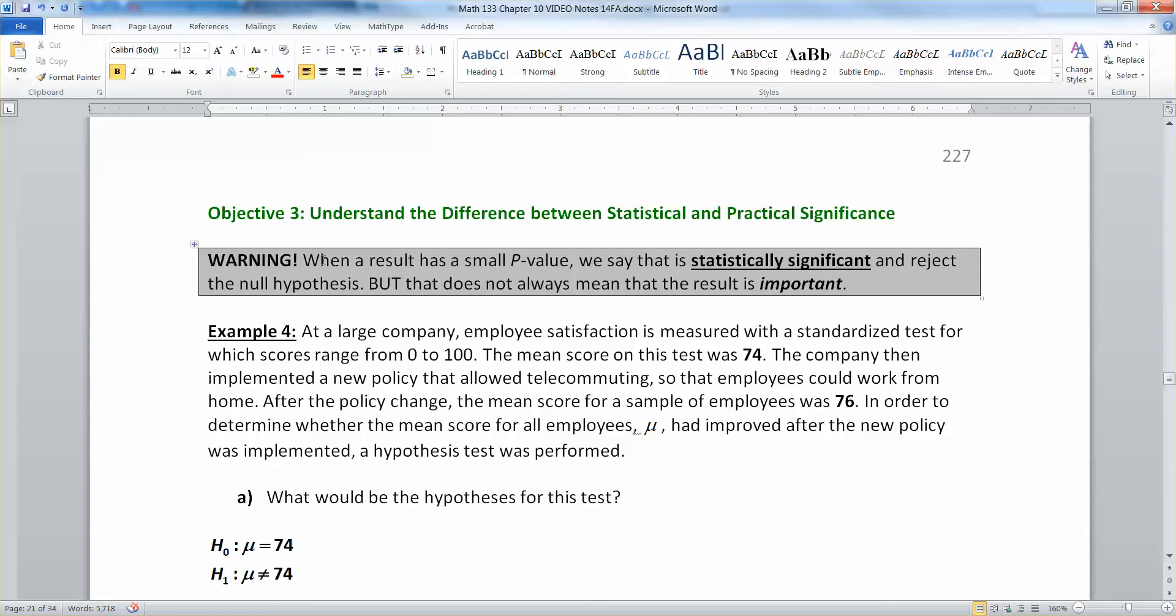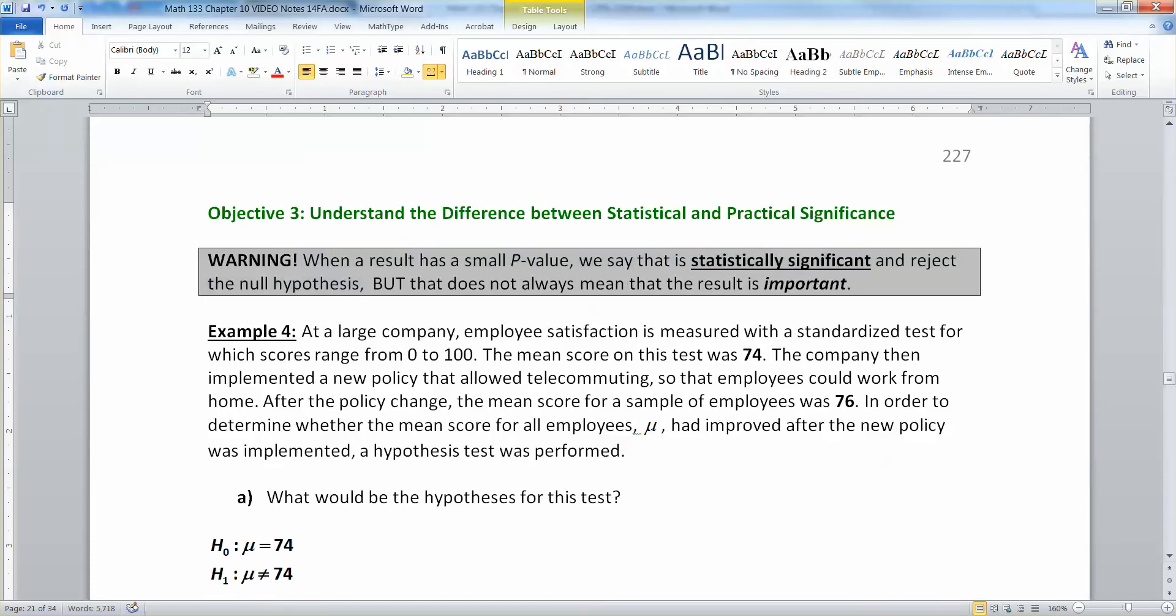When a result has a small p-value, we say that it is statistically significant and we reject the null hypothesis. That's what we've been doing in these two sections. But that does not always mean that the result is important, right? Real life important. So let me give you an example.